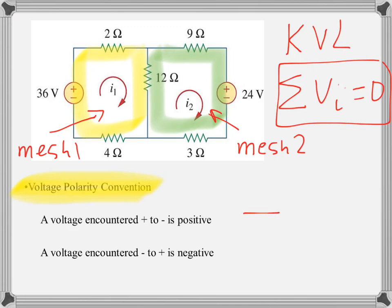So what does it mean? Let's say you select a single element and if the current flows from plus to minus, the voltage is assigned as positive, plus V. And the other way around, if the current flows from minus to plus, the voltage will be assigned as negative, negative V.